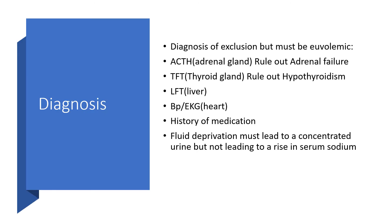How do we make the diagnosis? This is a diagnosis of exclusion, meaning you have to rule out various conditions. The individual must be euvolemic. We start by ruling out adrenal gland insufficiency, using ACTH level or ACTH stimulation test to rule out adrenal failure. Once adrenal failure is ruled out, we proceed.